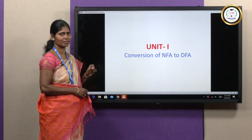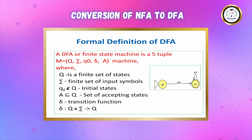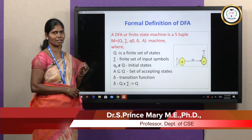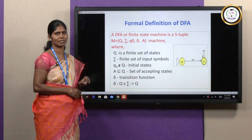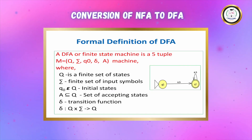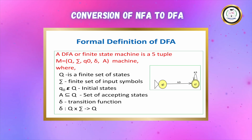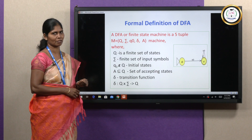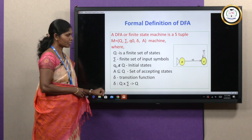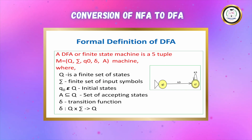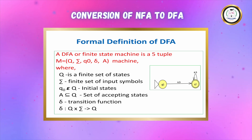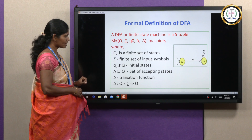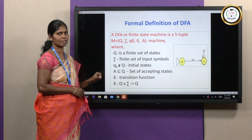First, let us see the formal definition of DFA. DFA is nothing but a Deterministic Finite Automata. Finite automata is divided into two types broadly: Deterministic Finite Automata and Non-Deterministic Finite Automata. The Deterministic Finite Automata is a state machine with five tuples: Q, sigma, Q naught, del, and A. Capital Q is a set of all the states in the DFA. Sigma is a set of input symbols. Q naught is the start state and A is a set of accepting states. Del is a transition function denoted as del of Q cross sigma tends to capital Q. That means from one state for one symbol, we can have only one transition in Deterministic Finite Automata.